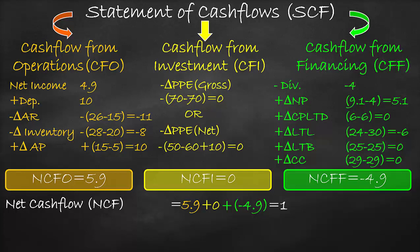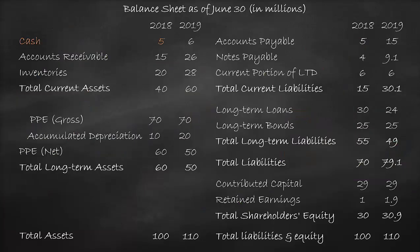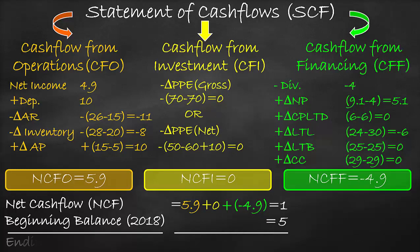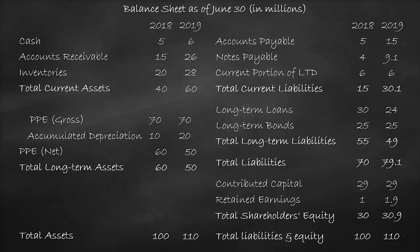You might ask: why make all these calculations if we could just get the difference in cash? The answer is simple — we need to analyse the cash flow thoroughly by knowing the cash inflow and outflow of each category of the statement of cash flows. We then add the beginning cash, which is cash in 2018 of $5 million, to get ending cash — cash in 2019 of $6 million — which matches the balance sheet, confirming our calculation is correct.